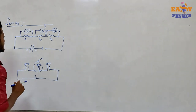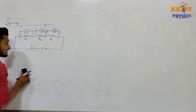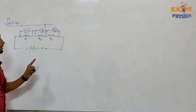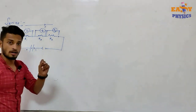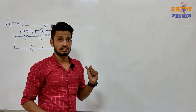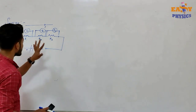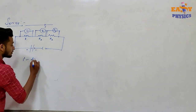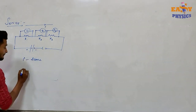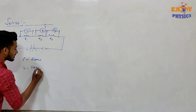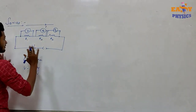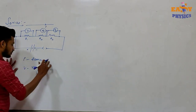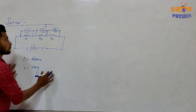If the resistors are connected in series, the potential difference is very important. If the resistors are connected in a series, the current is the same throughout. The potential difference will vary across each resistor.